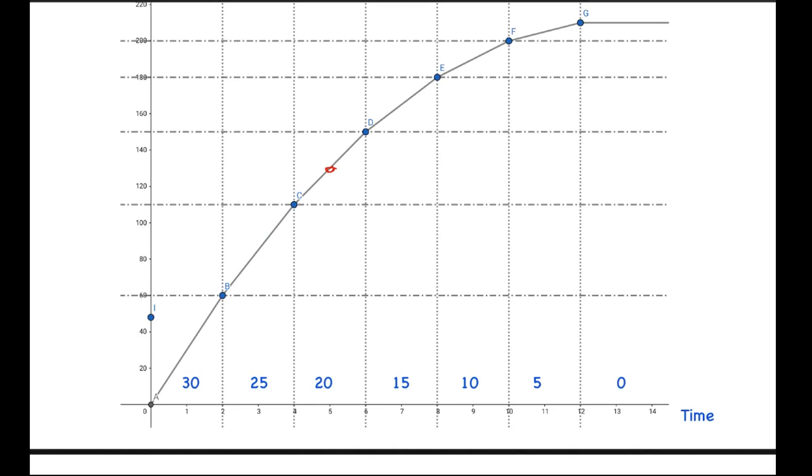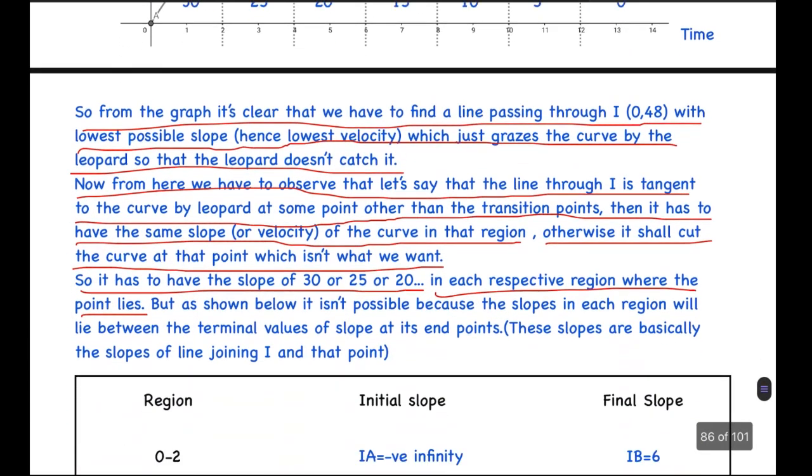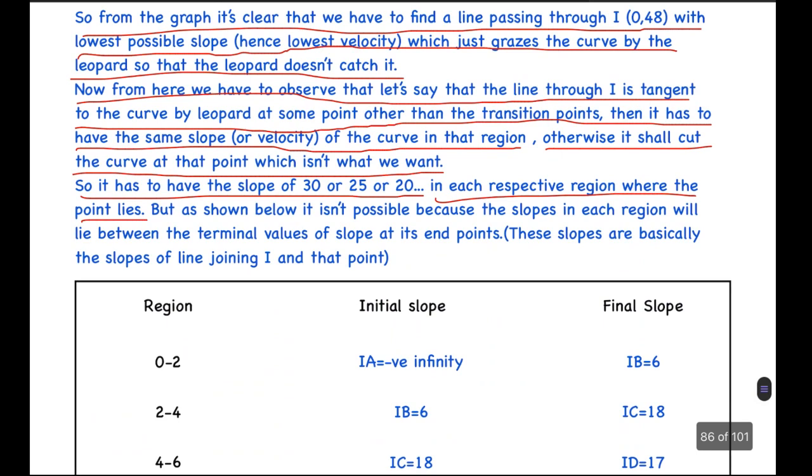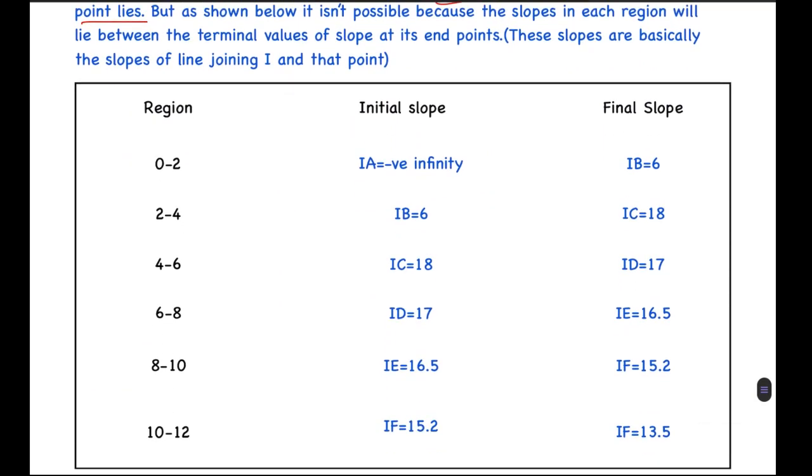But we will see that it is not possible. As shown below, it isn't possible because the slopes in each region will lie basically in the terminal values of the slope at the end points. These slopes are basically the slopes of the line joining I and that point.